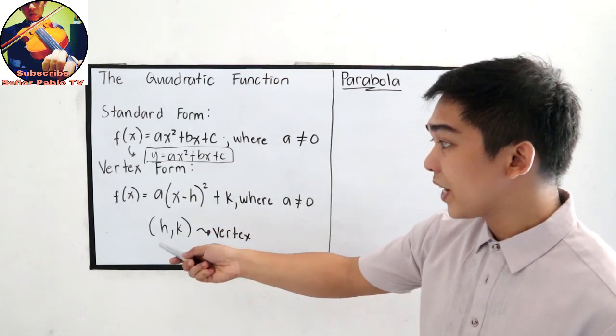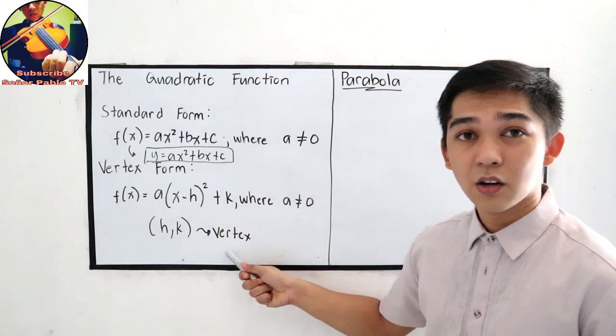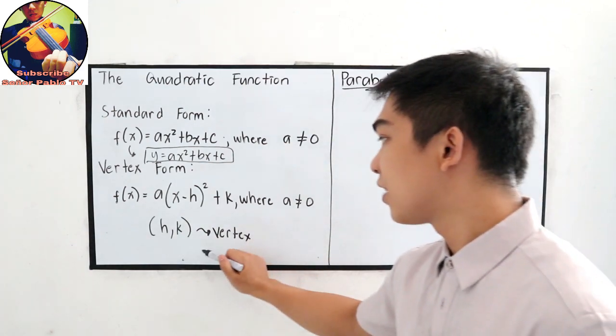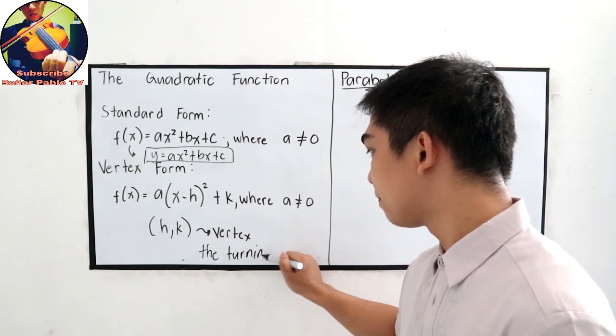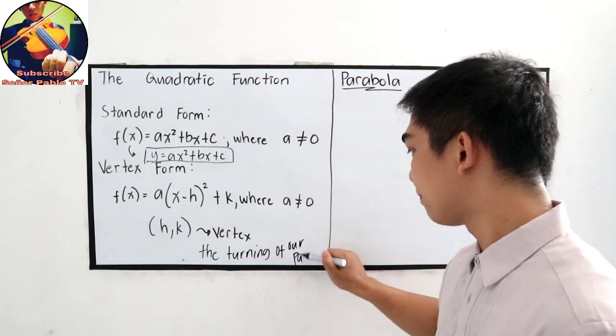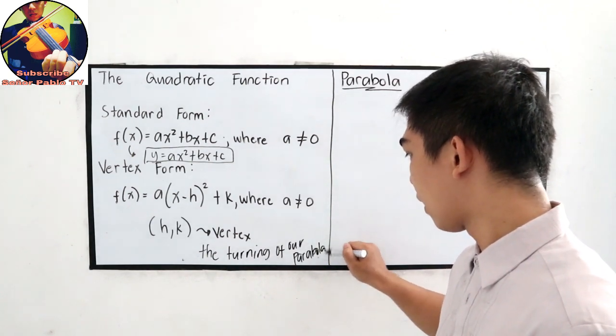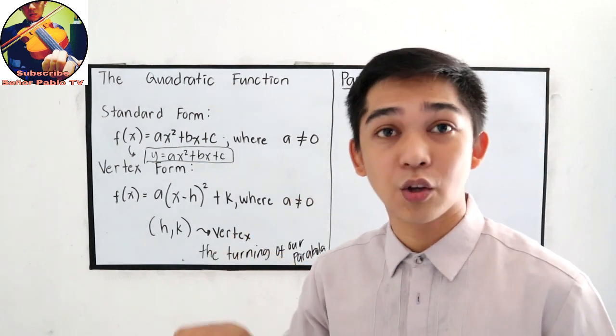We're in our vertex form. HK is the vertex. When we say vertex, the turning point of our parabola. The highest or the lowest point of the parabola.